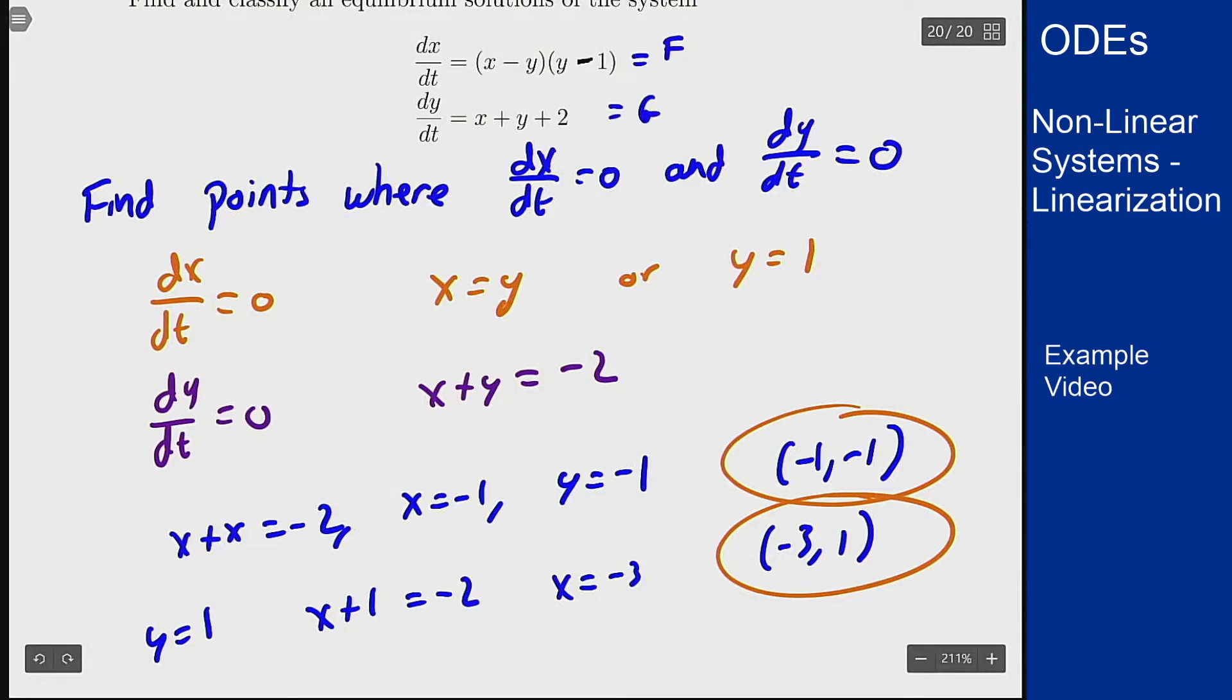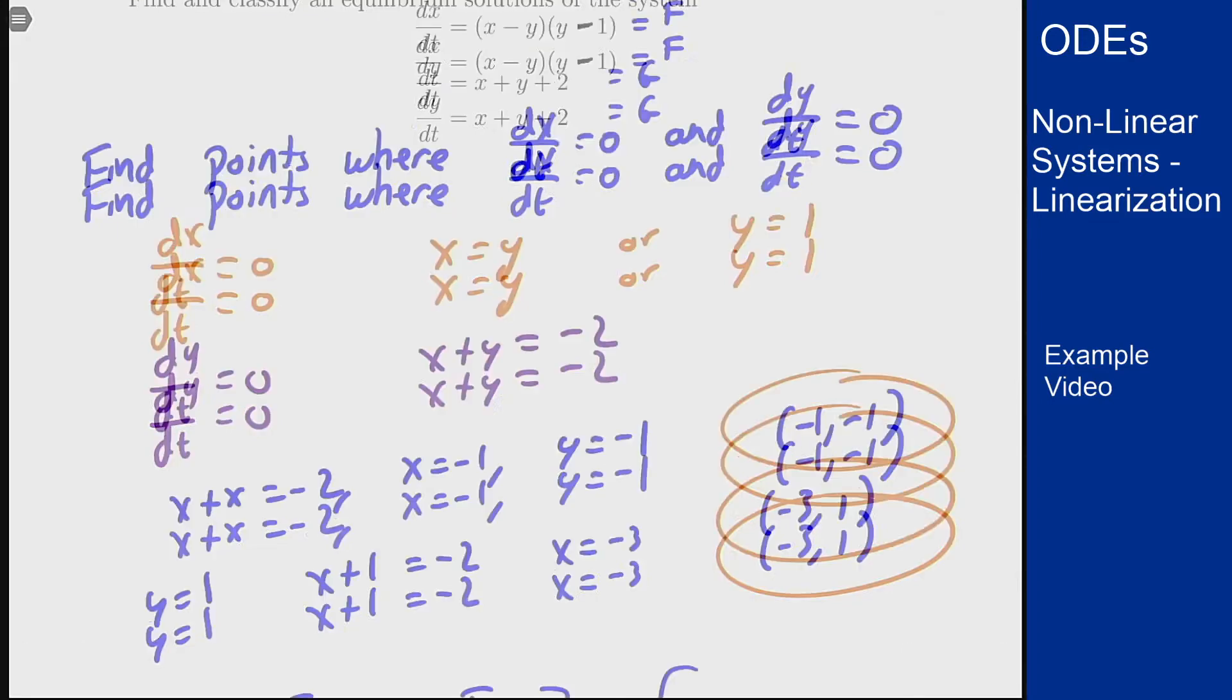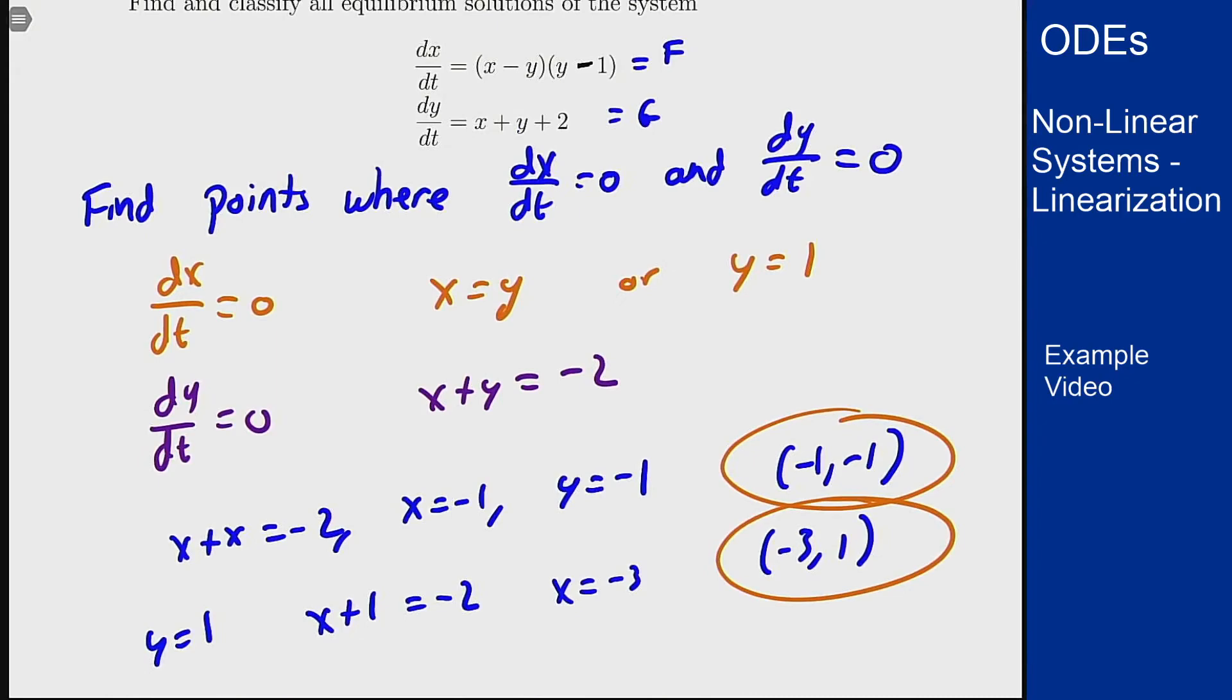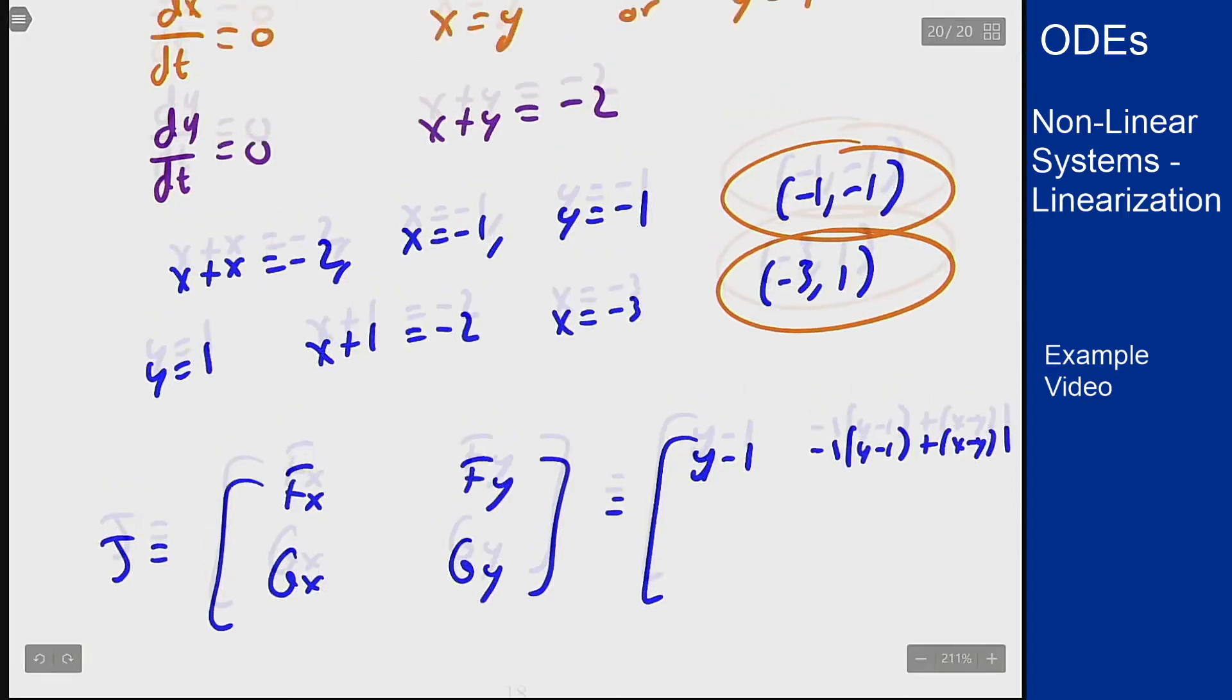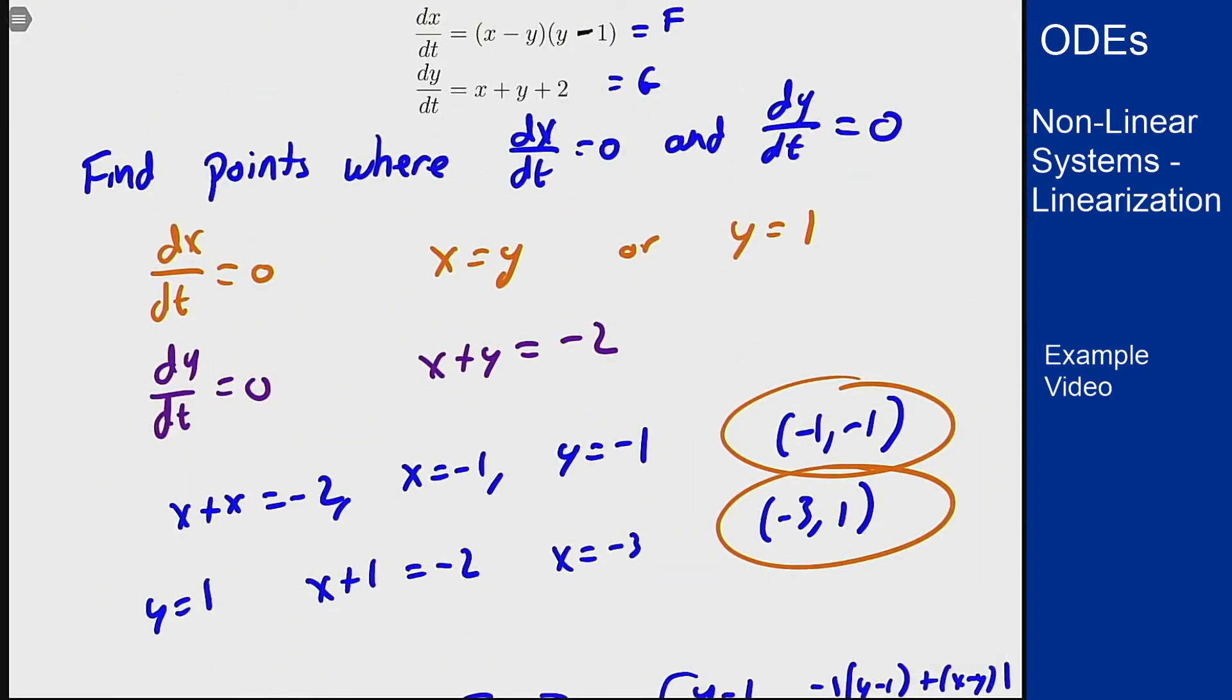Partial f partial x is just y minus 1 that's the only term that survives. Partial f partial y has two terms. We will get negative 1 times y minus 1 plus x minus y times 1. For g both partials are both 1 because it's a linear function.